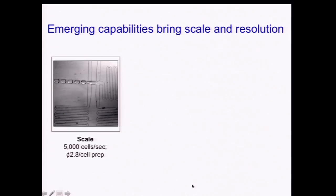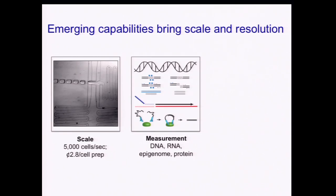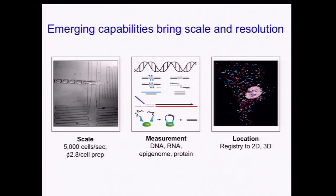We're also making very quick advances in critical additional capabilities that will bring us the right scale and resolution. For example, using reverse emulsion droplets — which is what we see in this movie — we can handle cells very quickly at the rate of thousands per second. With clever barcoding, we can bring down the costs of sample prep below 3 cents a cell. In addition, advances from many different groups are showing that we can measure many other variables besides RNA in single cells. And finally, other advances are able to use experimental methods to register cells to 2D or 3D positions.